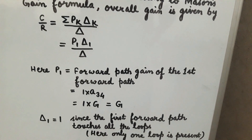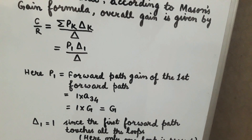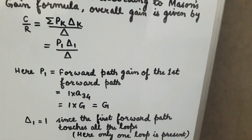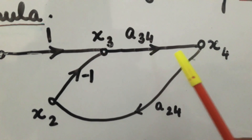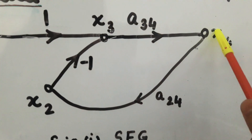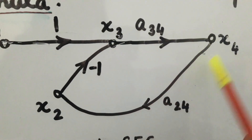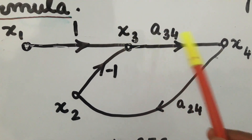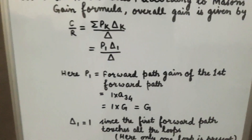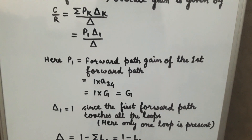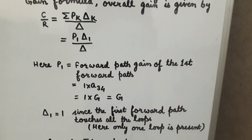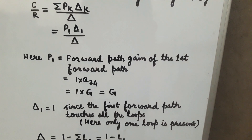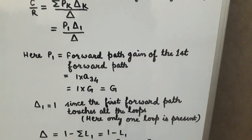The value of delta1 will be 1 if the first forward path touches all the loops. There is only one loop in this figure, which runs from x3 to x4 to x2 to x3. Since this forward path touches the loop, the value of delta1 = 1. In the numerator we have p1·delta1.